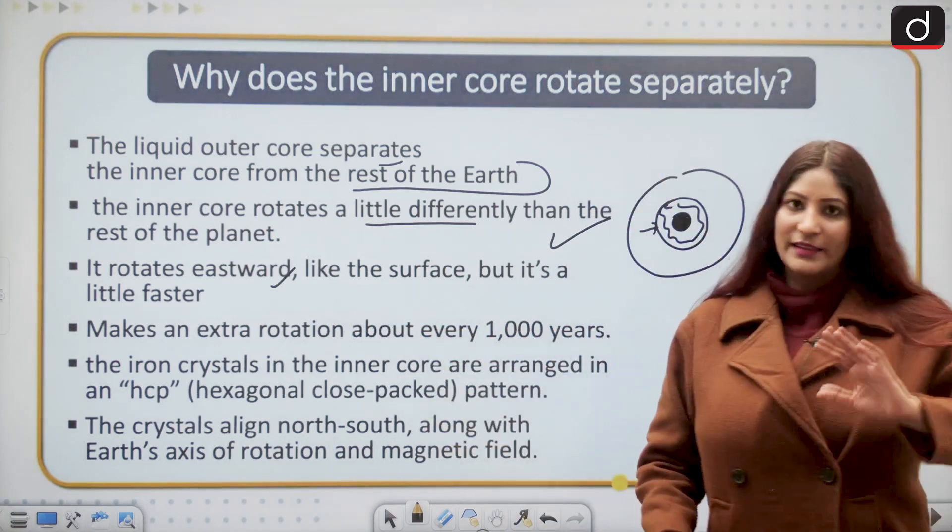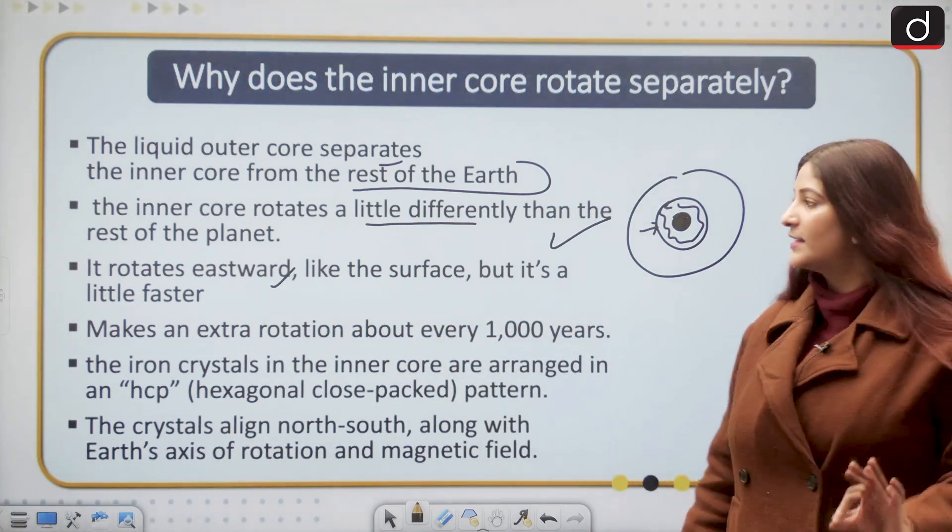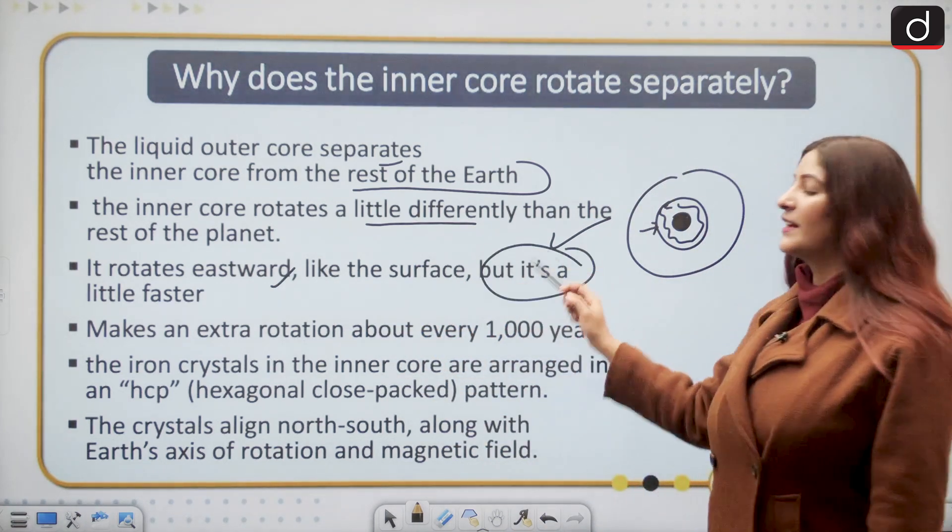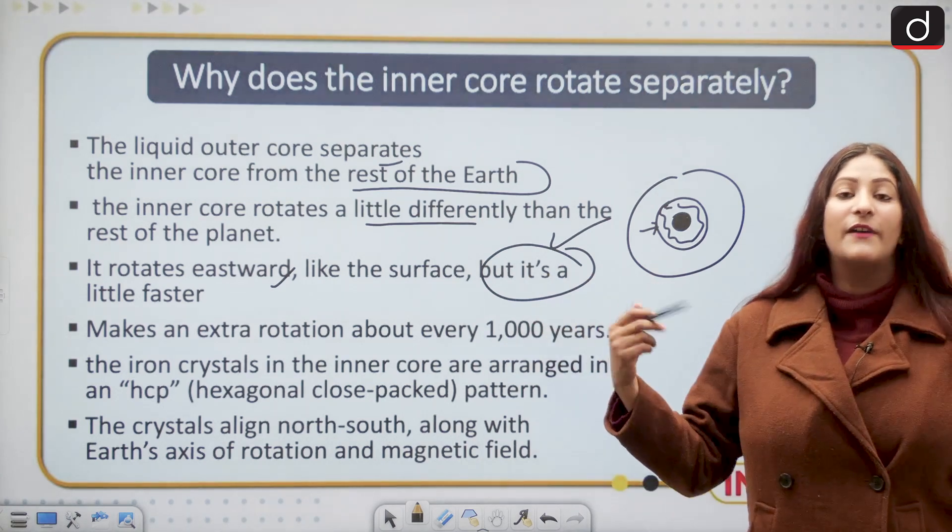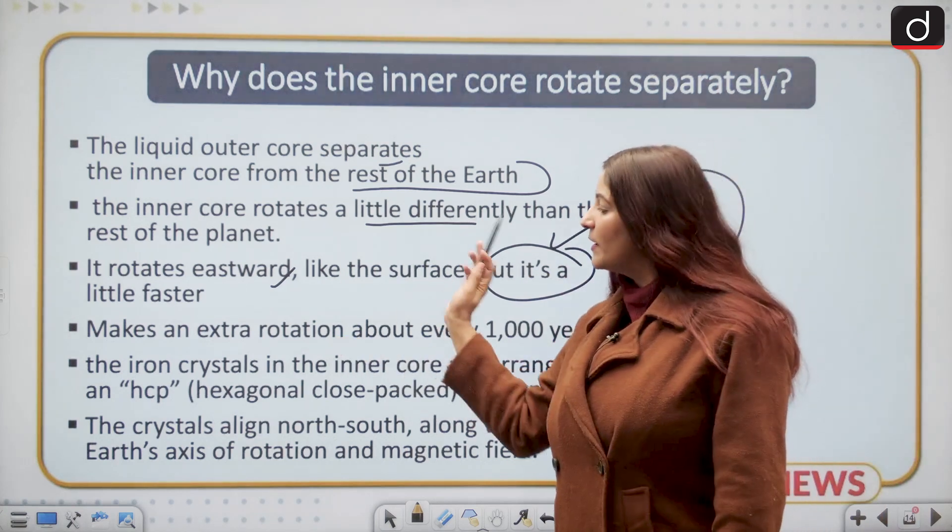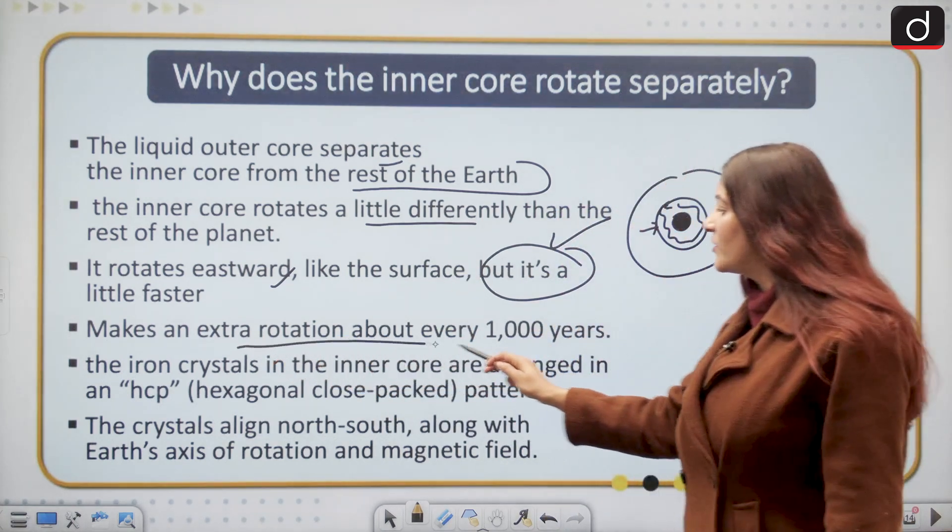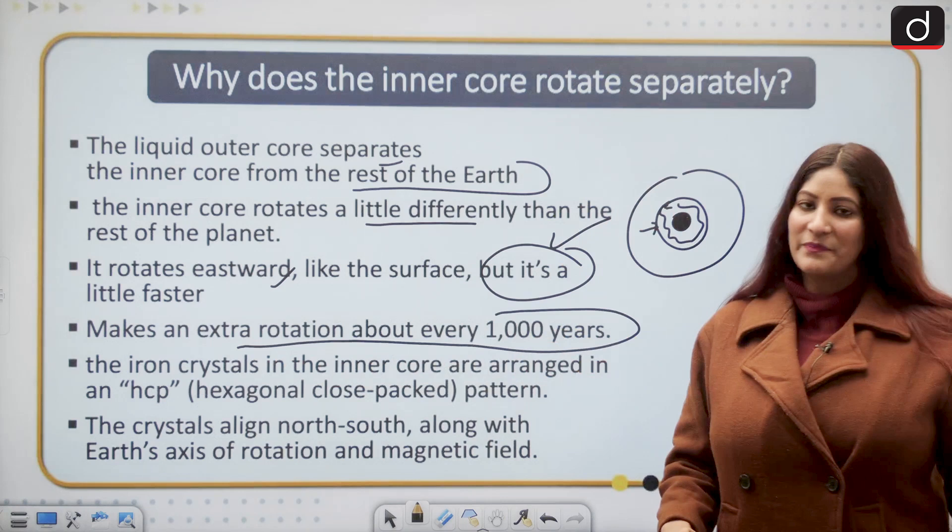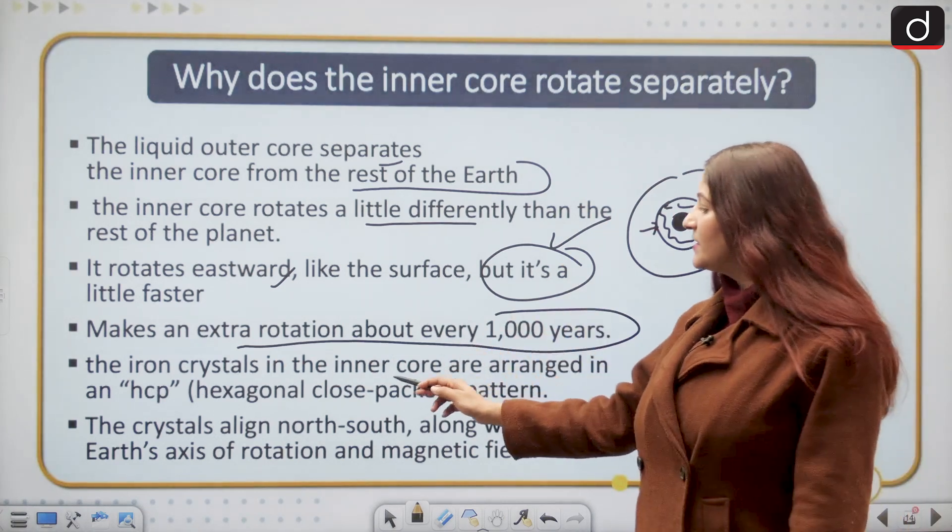It rotates eastward like the surface of the earth, but it's a little faster. It is rotating faster than the rest of the earth in eastward nature. Because of this it makes an extra rotation about every 1000 years.